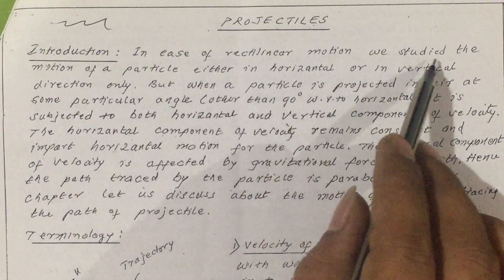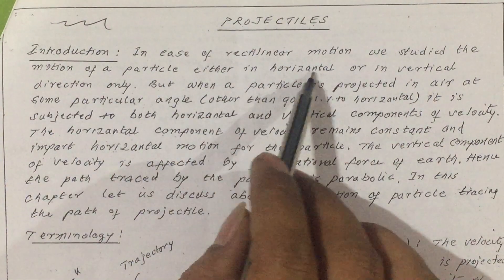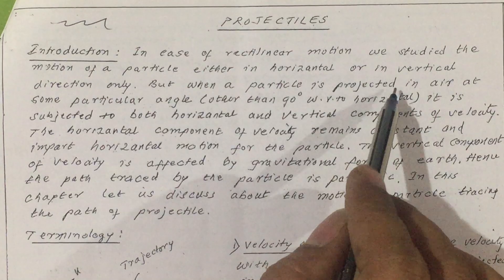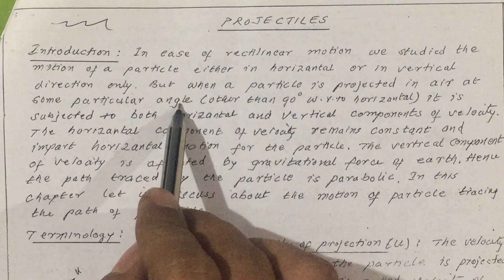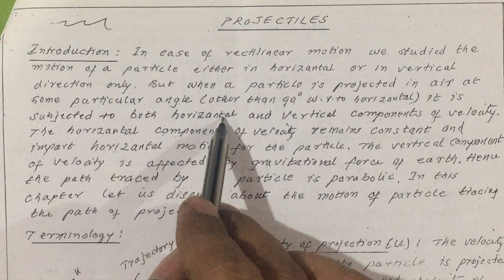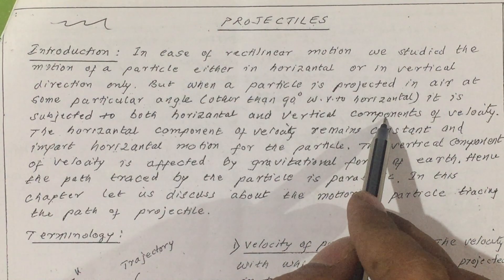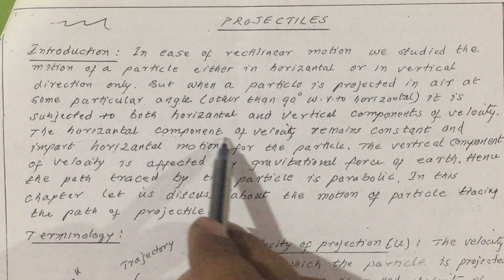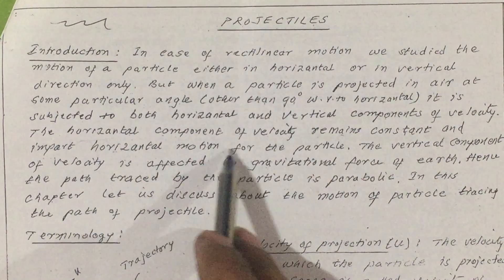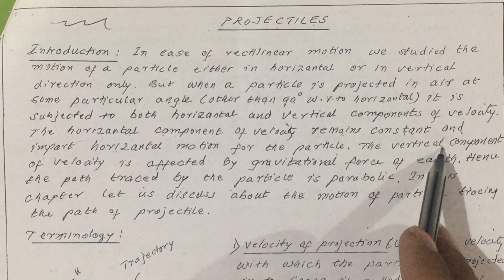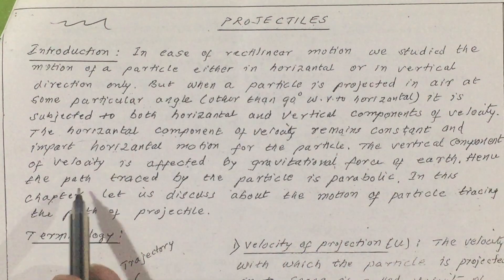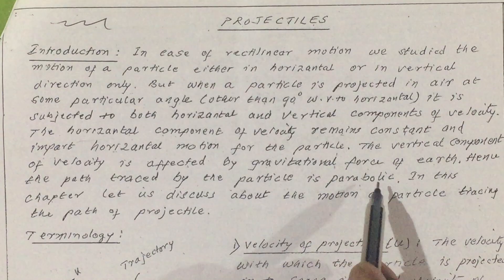In case of rectilinear motion, we studied the motion of a particle either in horizontal or in vertical direction only. But when a particle is projected in air at some particular angle other than 90 degrees with respect to horizontal, it is subjected to both horizontal and vertical components of velocity. The horizontal component of velocity remains constant and imparts horizontal motion to the particle. The vertical component of velocity is affected by the gravitational force of the earth. Hence, the path traced by the particle is parabolic.